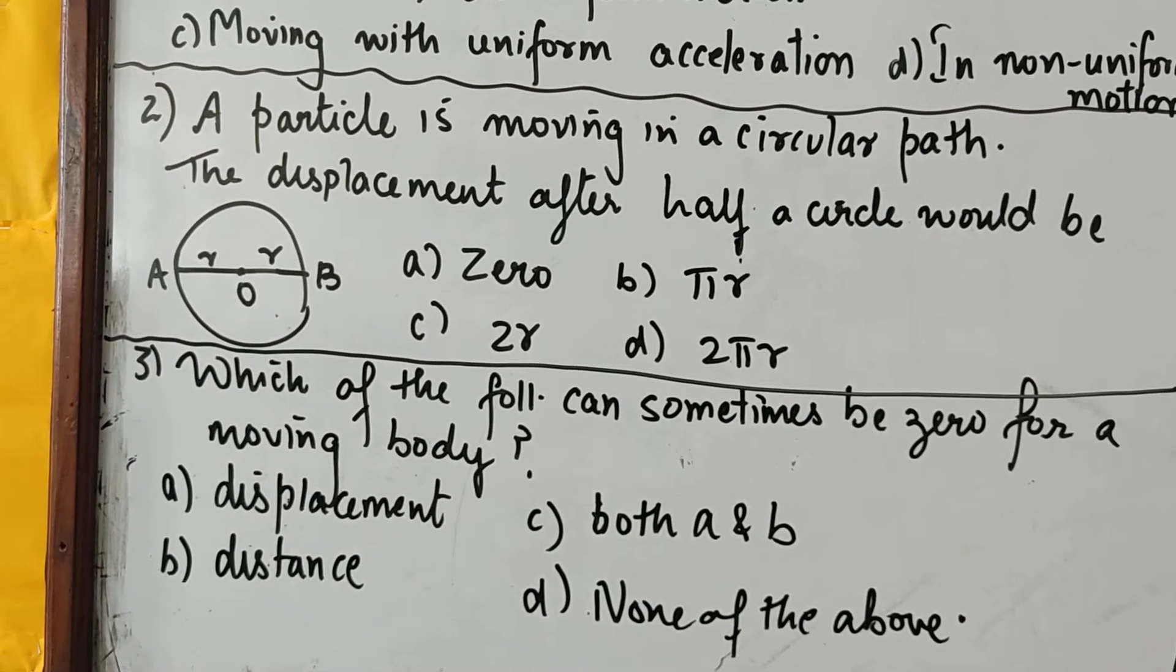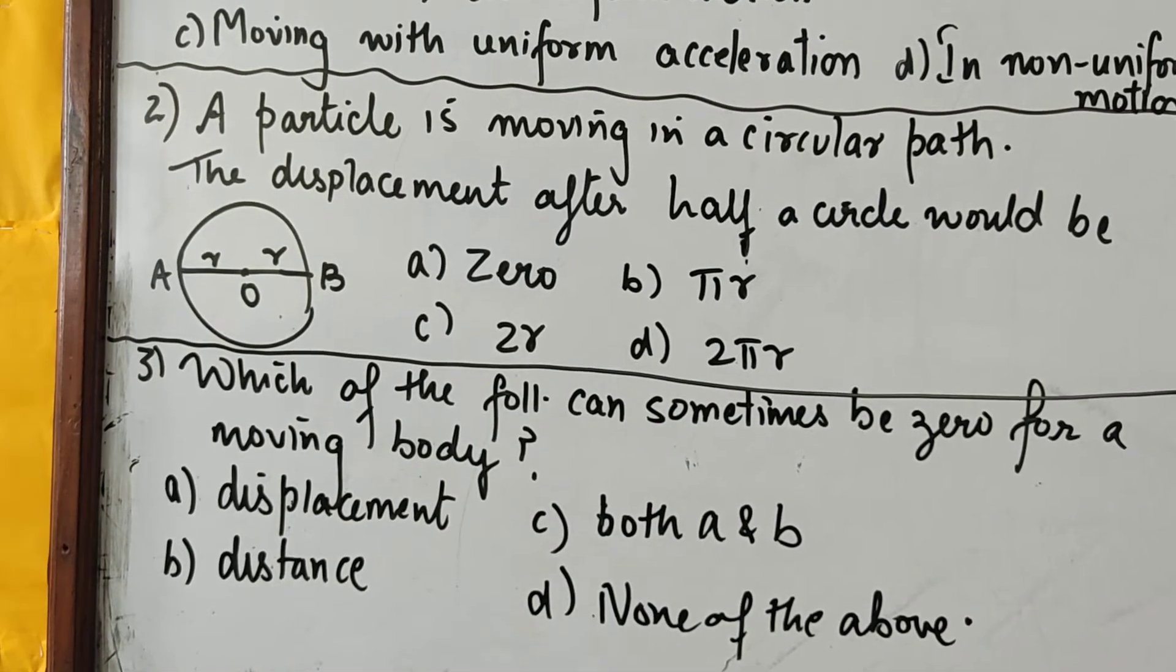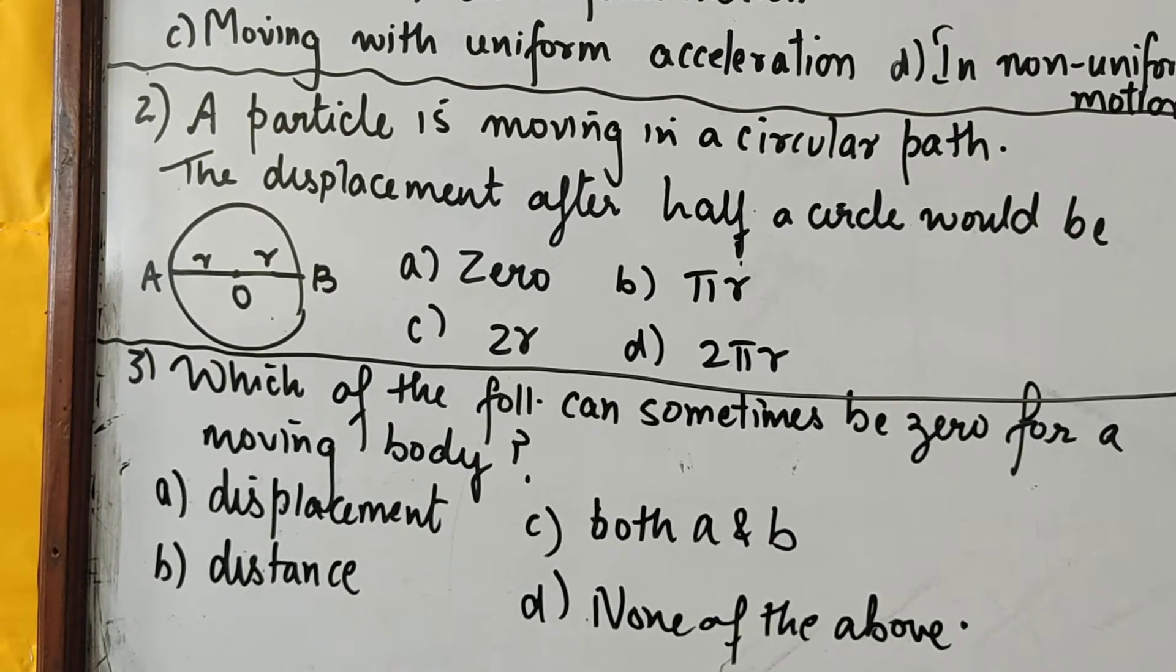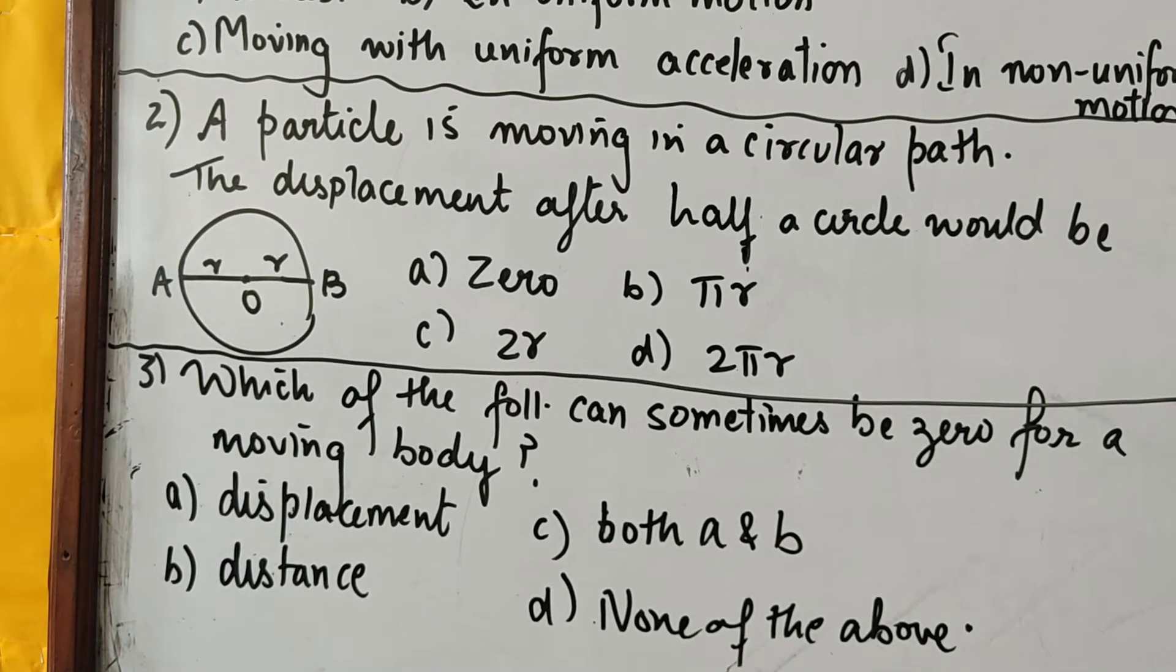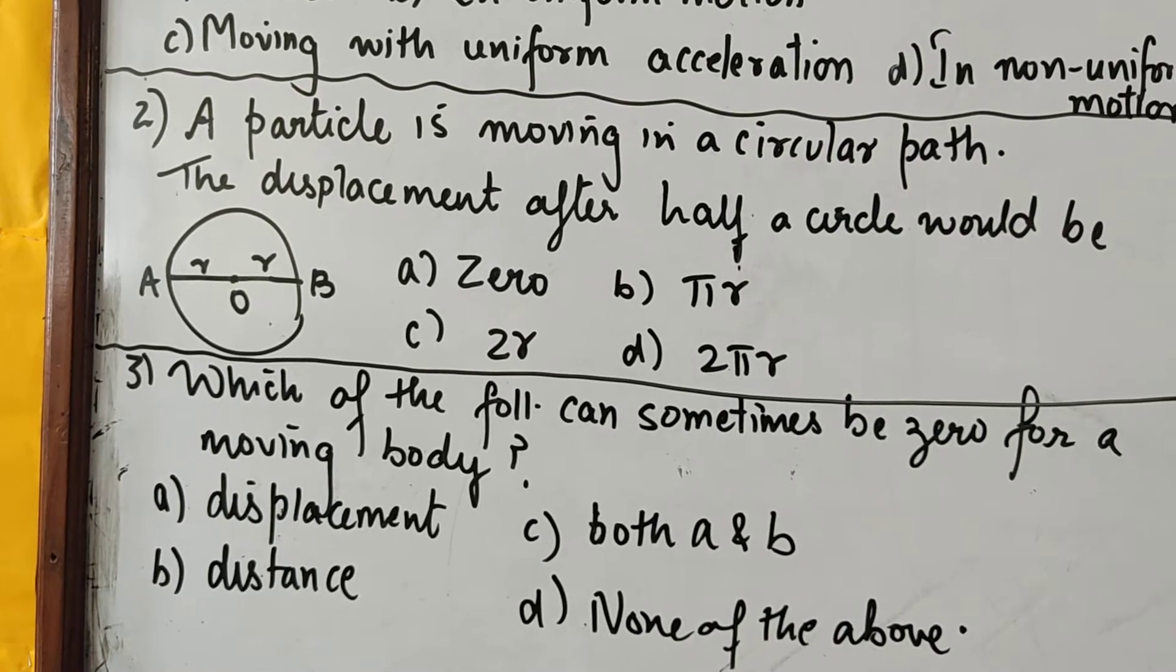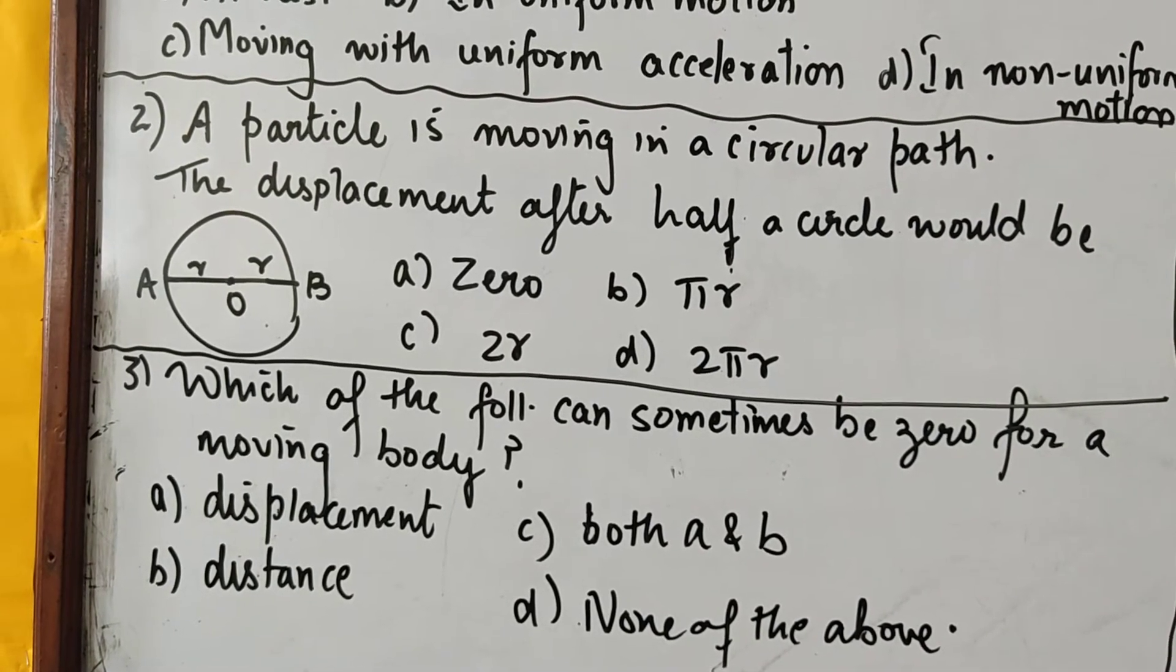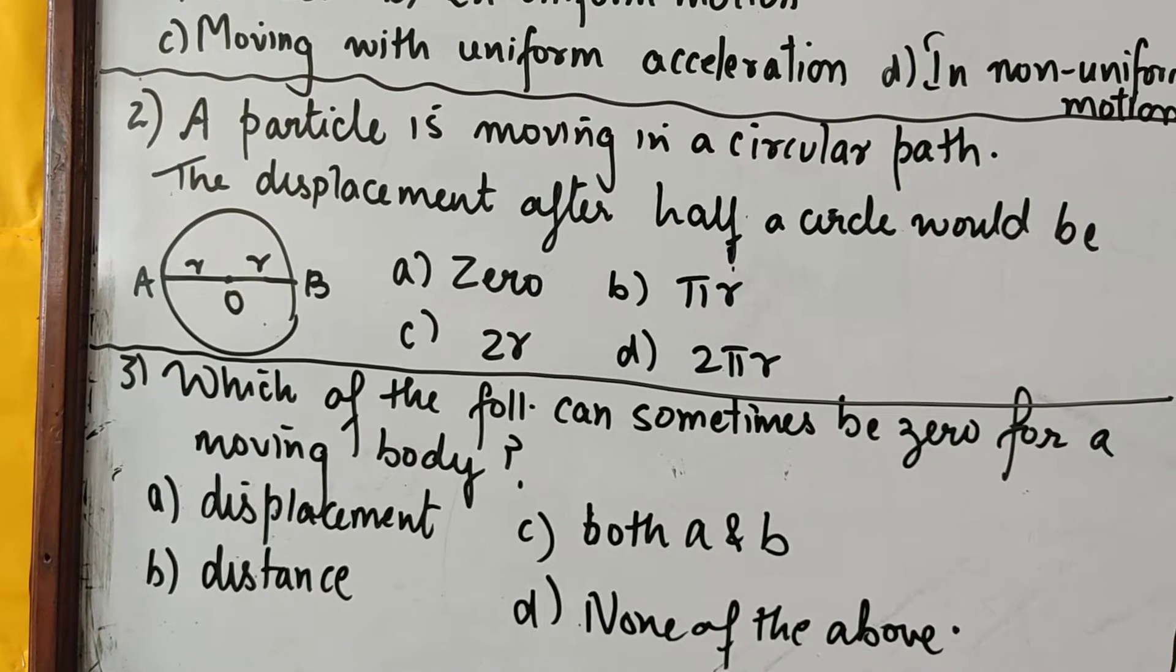Now, you know that whenever body is in motion, its distance can never be 0. Displacement can be 0 because displacement is the shortest distance from the initial position to the final position.